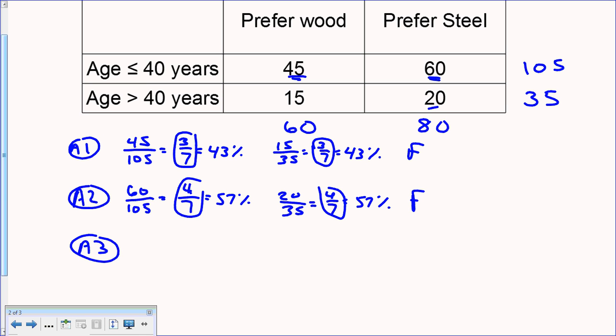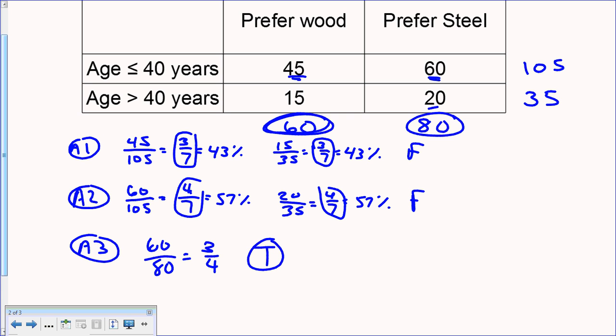Question A3 says the number of riders who prefer wood frames is about three-quarters of the number who prefer steel frames. Total wood-preferrers: 45 young plus 15 older equals 60. Total steel-preferrers: 80. Taking the ratio 60 to 80 and dividing both by 20 gives 3/4, which is 75%. So yes, 60 is three-quarters of 80. This is a true statement — we finally have one after two false ones.